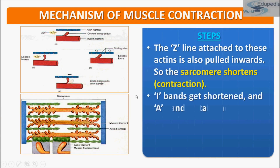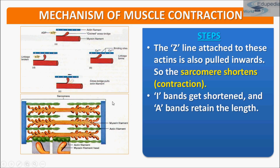The Z line attached to the actin is pulled inwards and the sarcomere shortens — and that is what contraction is. The I band gets shortened while the A band retains its length. As you can see, this is the myosin filament, the green are actin filaments, and these are Z lines. The distance between two Z lines is the sarcomere. The Z lines are pulled inward, and the sarcomere — the distance between two Z lines — gets shortened, which is muscle contraction.